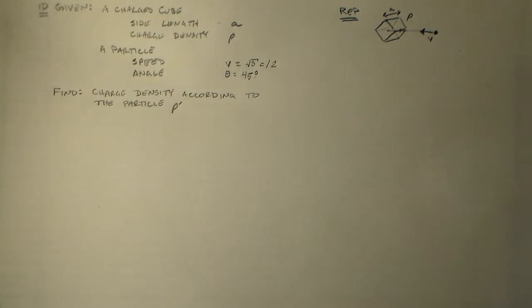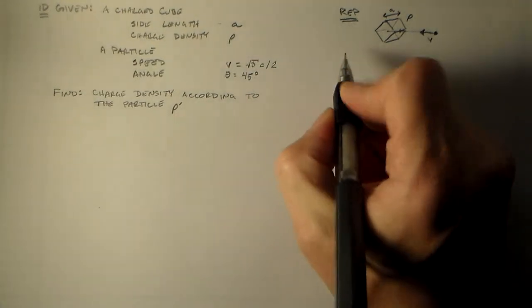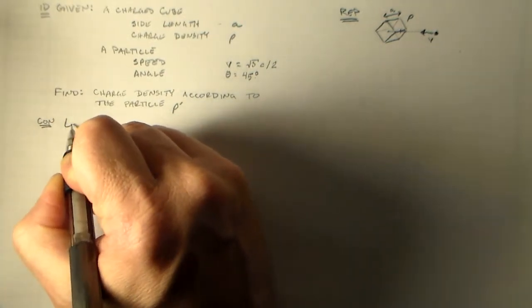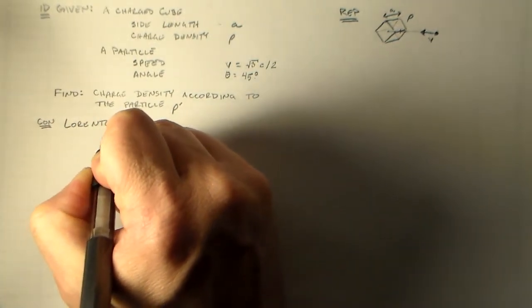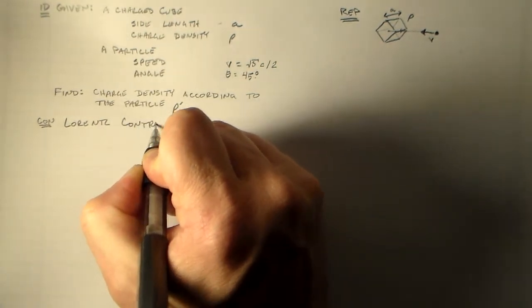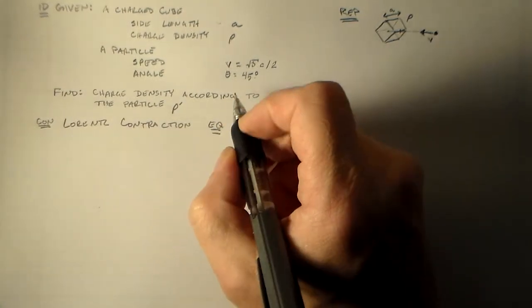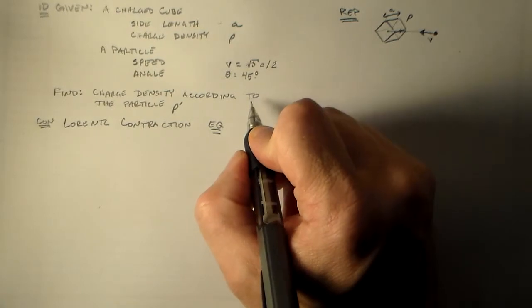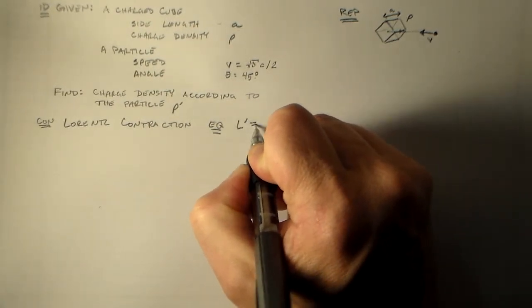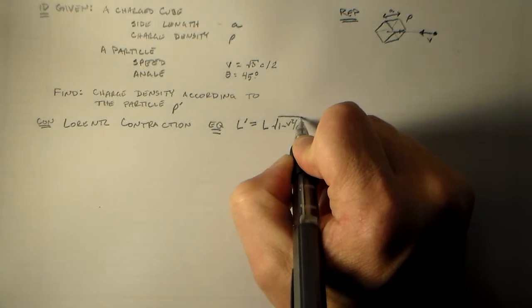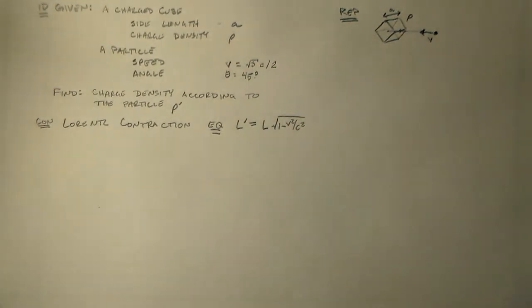So what we're going to have to do, what we want to find, is the charge density according to the particle, and that would be ρ'. So the way we're going to approach this is by the Lorentz contraction. So the concept is the Lorentz contraction. And that has an equation that looks something like L' = L√(1 - v²/c²). And it's because this is an ugly term that I wanted to give that a number.